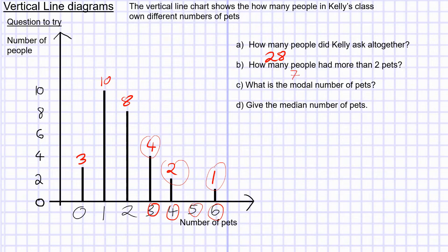What is the modal number of pets? The most frequently seen value — looking at one pet, ten people had one pet. So the mode is one. It's the value with the highest frequency. The modal number of pets is one.